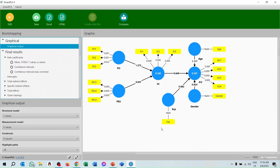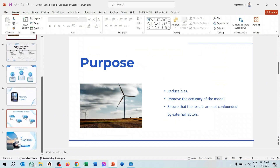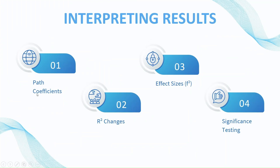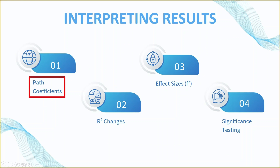When you add a control variable, what do you need to investigate? Going back to the PowerPoint presentation: we need to investigate the path coefficient first — all are insignificant. We also checked the changes of R-square, which are very minimal. We can say there is no significant difference whether we add the control variable or not, and the significance testing shows insignificant results.